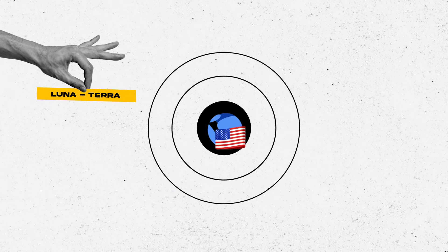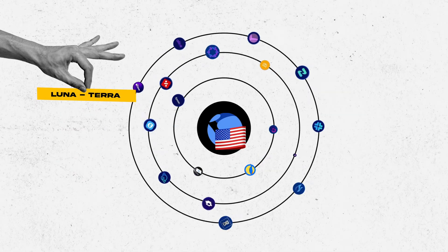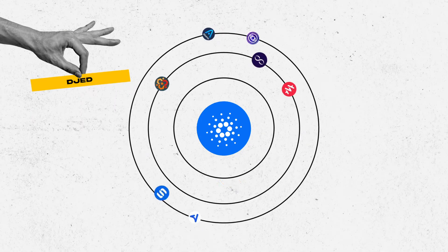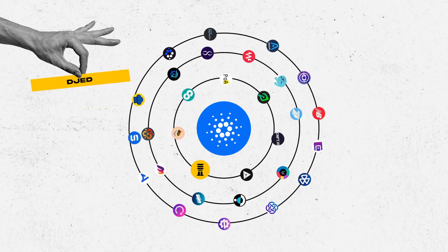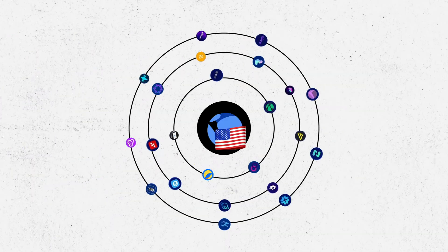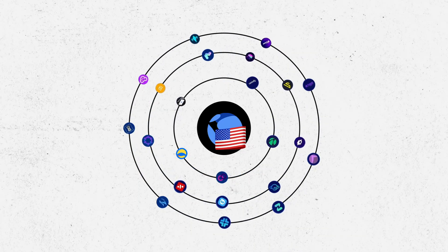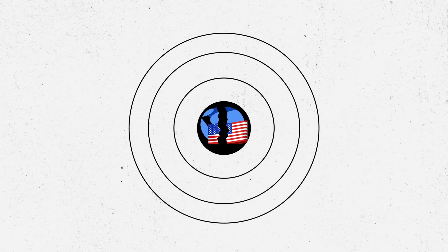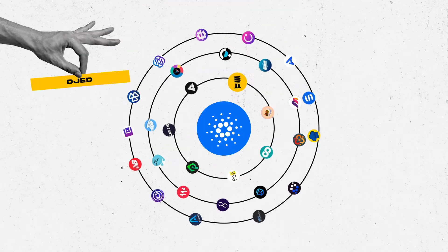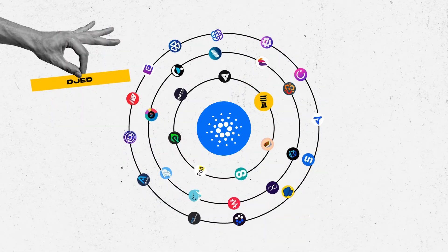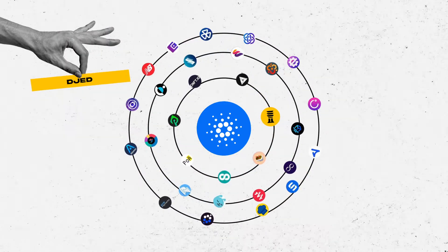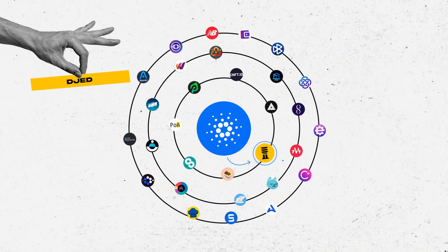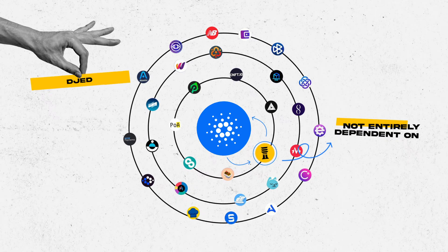The first key difference is that the entire Terra ecosystem is built around Luna, while D-Jet is fundamentally built around ADA and operates within the Cardano ecosystem. This means that when Luna USD encounters issues, the entire Terra ecosystem is affected and, in practice, it collapsed rapidly. D-Jet, on the other hand, is an open-source protocol operating within the vast Cardano ecosystem, relying on the value of ADA but not entirely dependent on it.